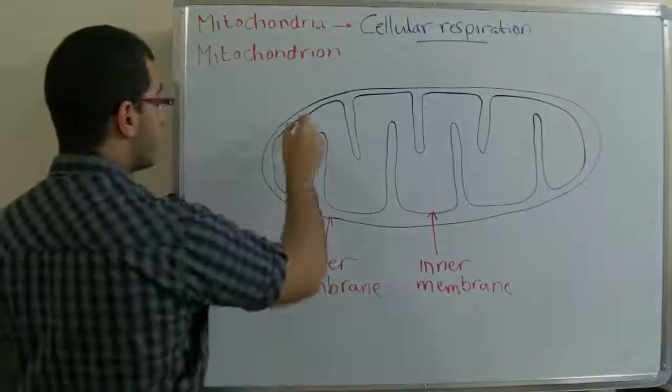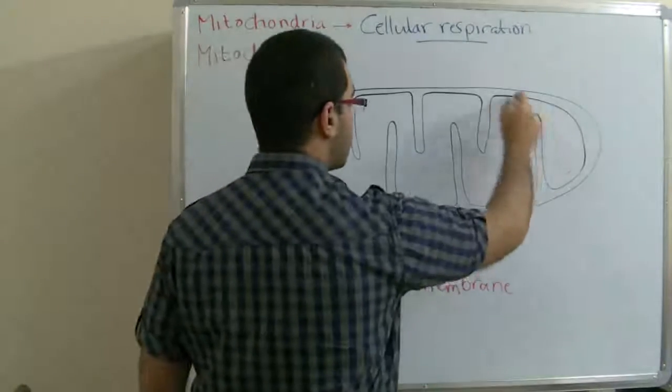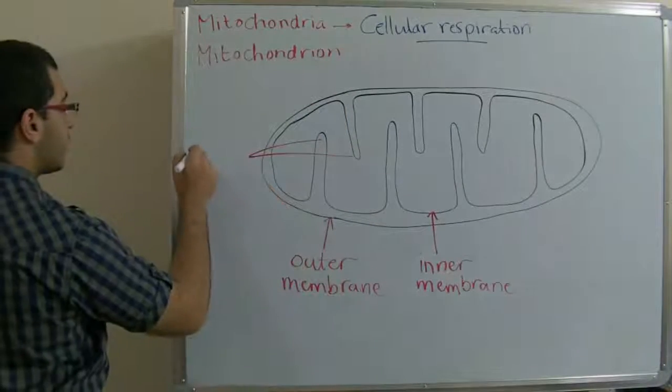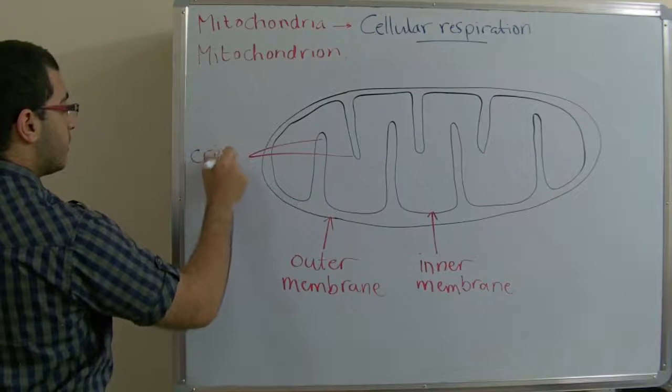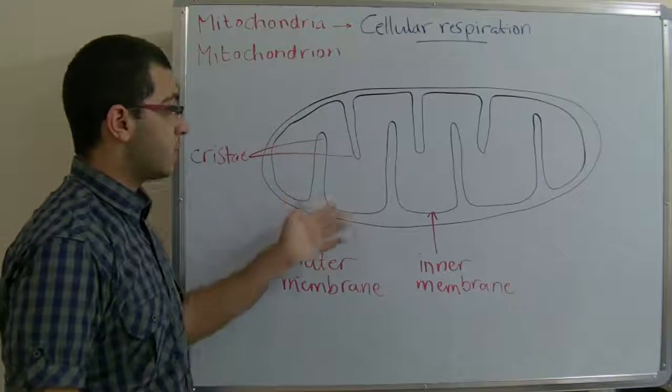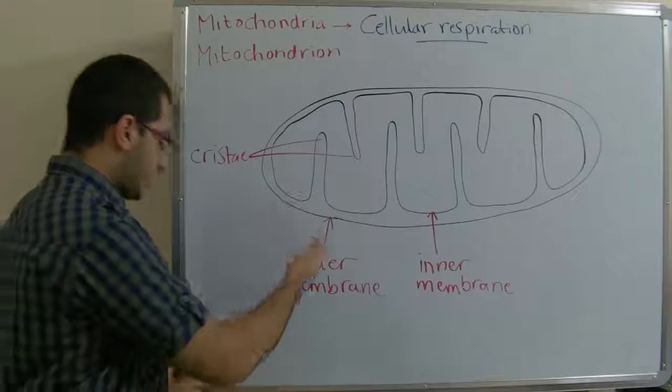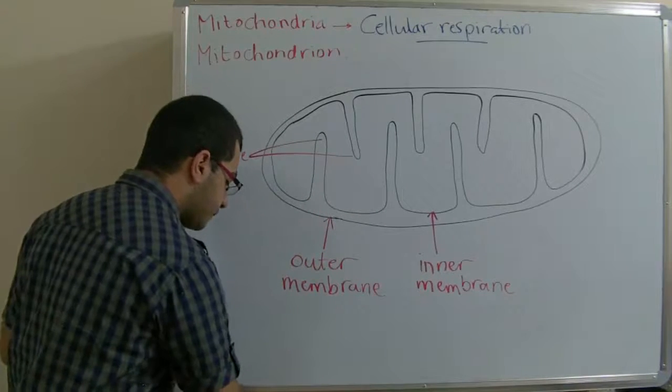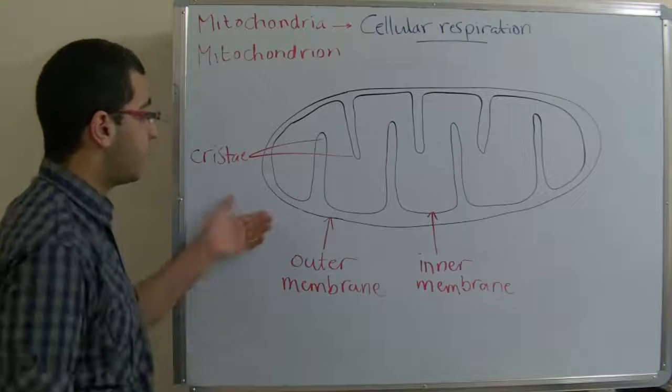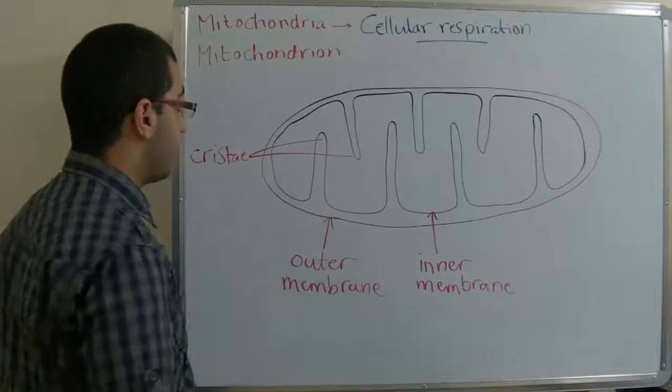This inner membrane is folded into a group of folds, as we can see, which are called cristae. These folds, of course, increase the surface area, the inner surface area of the mitochondrion, which increases the ability of the cell to carry its function. So the cristae help the mitochondrion to carry its function at the highest efficiency level.